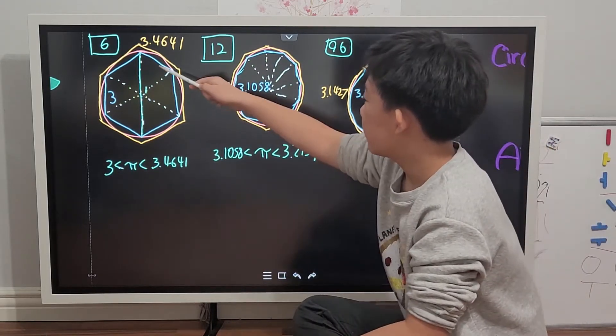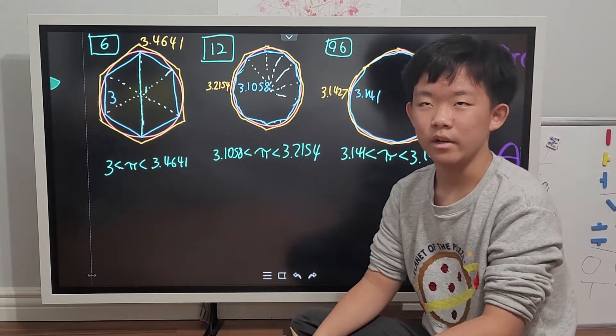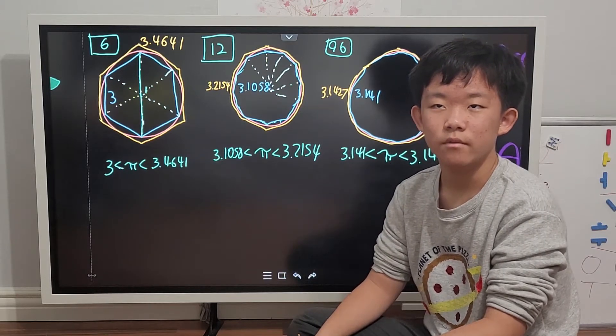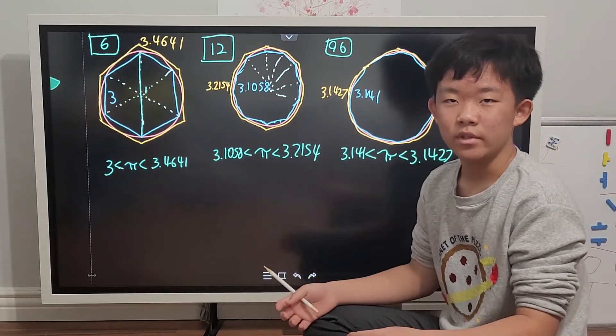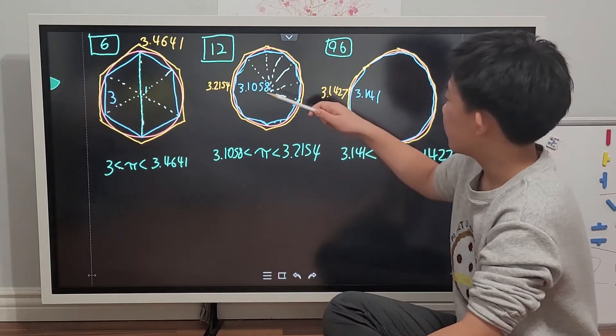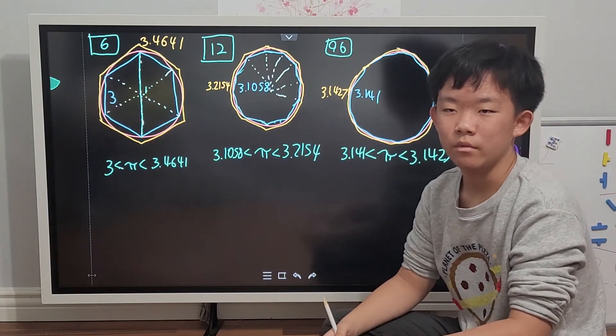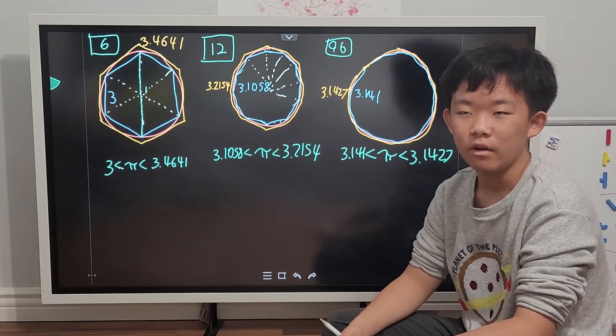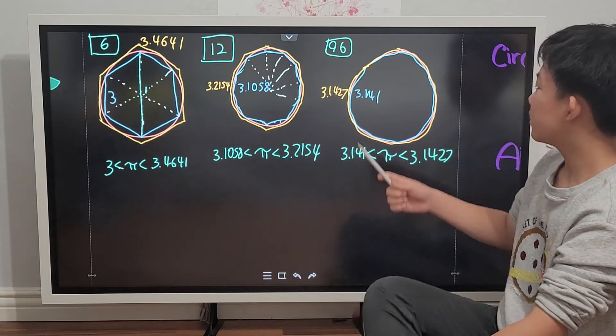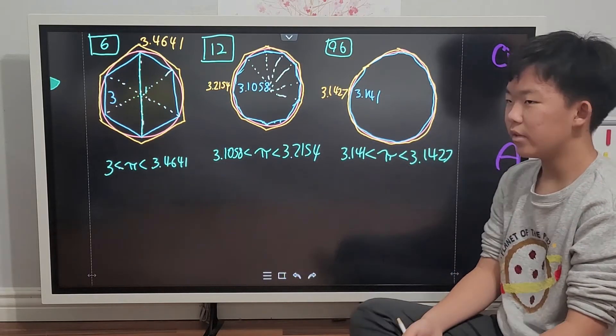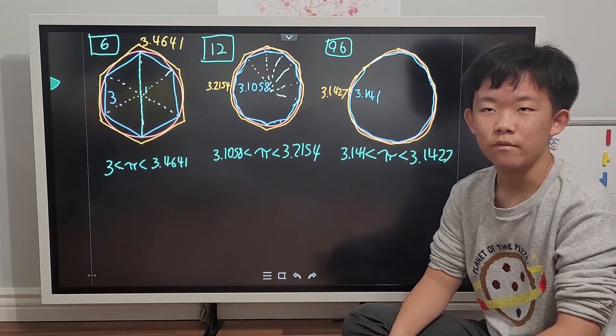If you do the math, the perimeter of the inner hexagon will equal 3. The perimeter of the outer hexagon will equal 3.4641. And pi is somewhere between 3 and 3.4641. And then when you get an even larger number of sides, say 12, then your inner perimeter will be 3.1058, and your outer perimeter will be 3.2154. As you move on, let's get to the 96-gon. You eventually left with pi being between 3.141 and 3.1427.